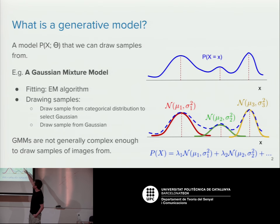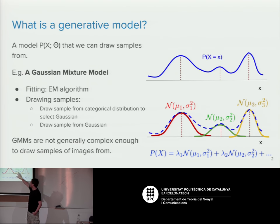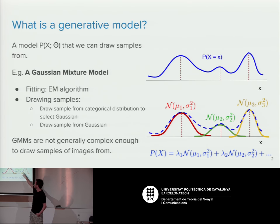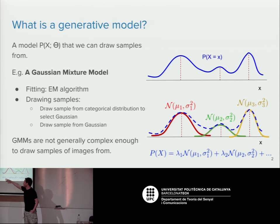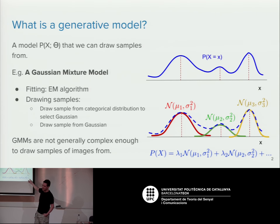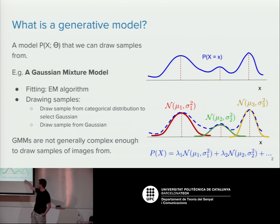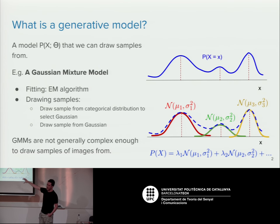The graph on the top is a mixture of Gaussians, represented by a mixture model with three different Gaussians with different means — shown by the red lines — and different standard deviations. The probability of any observation is just some convex combination of these Gaussians, where the coefficients are all between zero and one and add up to one — basically a linear combination of Gaussians.